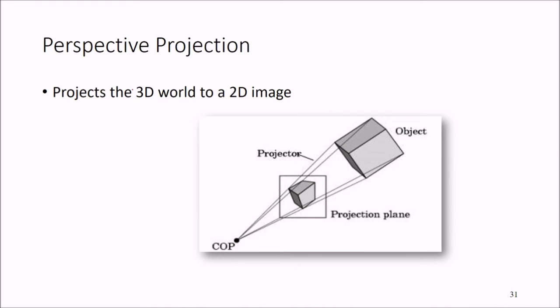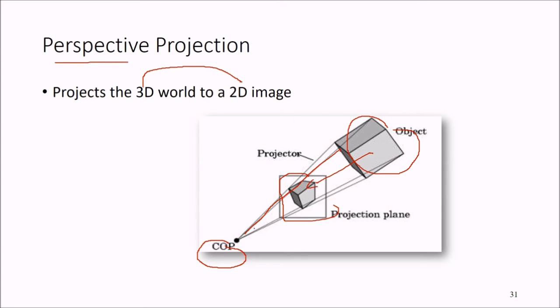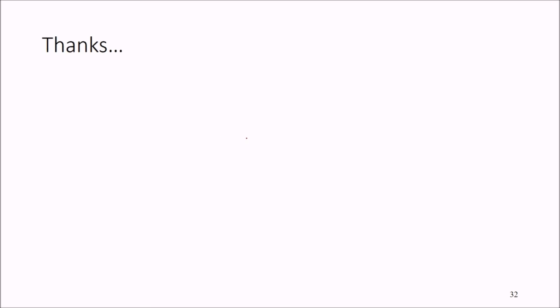Then we come to projection — projecting the 3D world to a 2D image, the final step of the rendering process. In perspective projection, we have a center of projection, an object, projection lines, and a projection plane. This is how the human eye views objects — using perspective projection. This was just a brief idea of 3D graphics and 3D rendering. Thank you so much, take care.